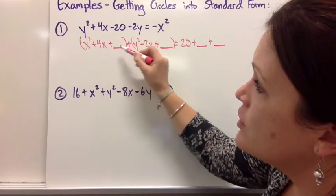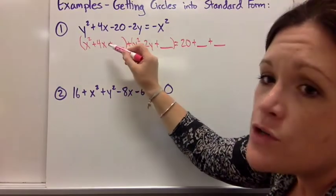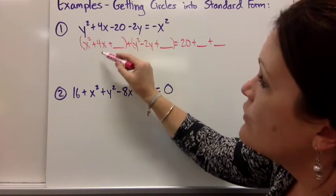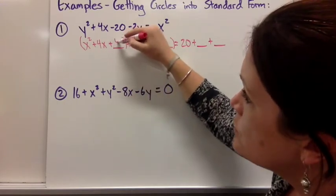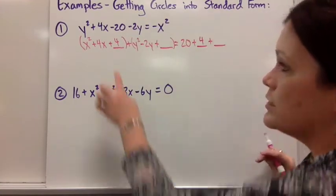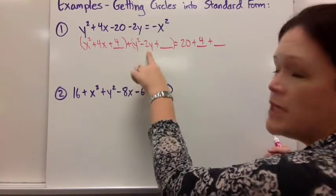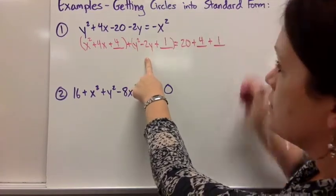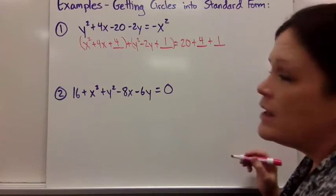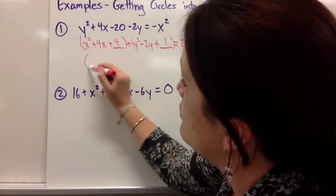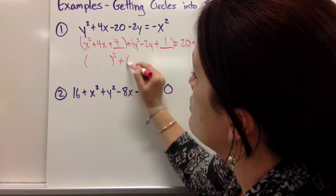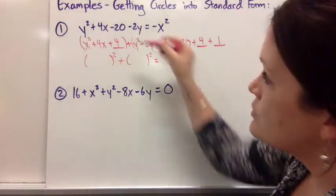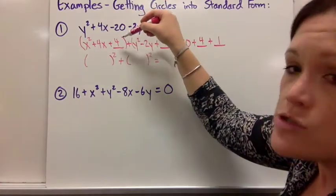Half of 4, to fill in our blank, remember we take half of the middle term and we square it. So half of that middle term's coefficient was 4. Half of 4 is 2, 2 squared is 4. So put it on both sides. The same thing here, half of -2 is -1, -1 squared is positive 1. So we put it on both sides. And then we're almost to standard form because now we can rewrite these the way we looked at when we learned how to complete the square. This trinomial is a perfect square trinomial.